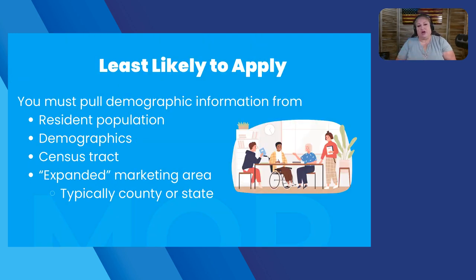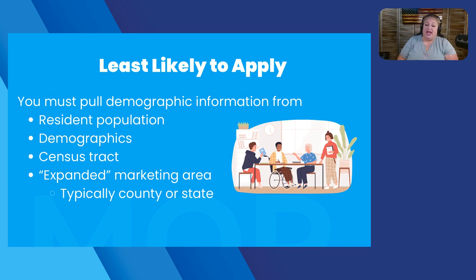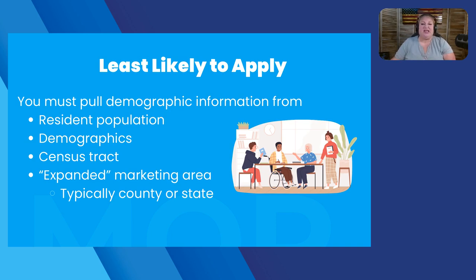The first thing you need to do when doing your marketing plans is look at who is least likely to apply for your property. You're going to look at a number of different demographic reports to decide this — your resident and applicant population, the demographics for your existing property including race, ethnicity, and disability. You're also going to look at your census tract information, and typically you'll be using an expanded marketing area outside of your specific census tract, often either the county or the state, depending on the diversity of those areas.